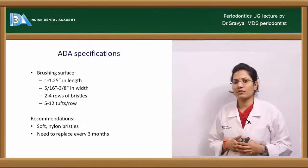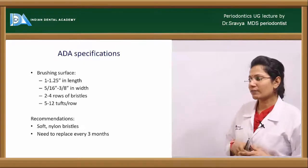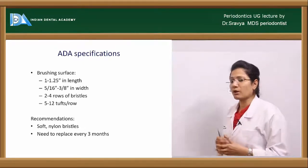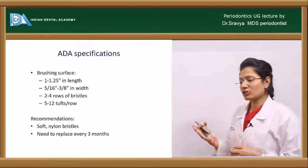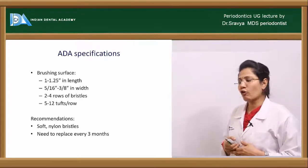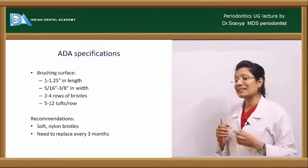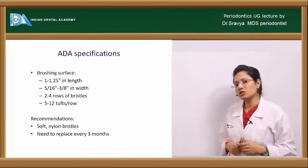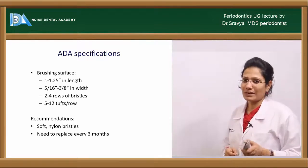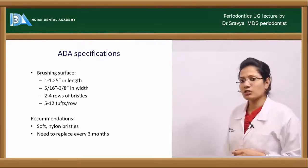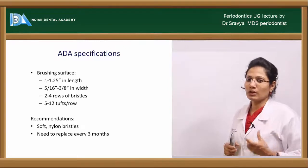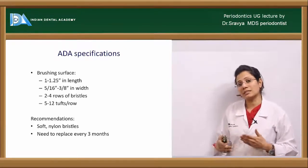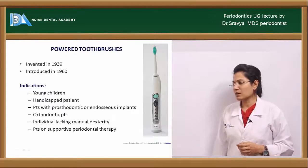The ADA specifications of a toothbrush: the brushing surface should be about 1 to 1.25 inches in length, 5/16 to 3/8 inches in width, with 2 to 4 rows of bristles, each row having 5 to 12 tufts, and each tuft having 80 to 86 bristles. The ADA recommendation is to use a soft nylon toothbrush and replace it every 3 months.